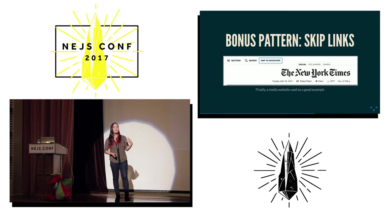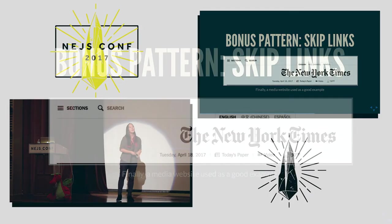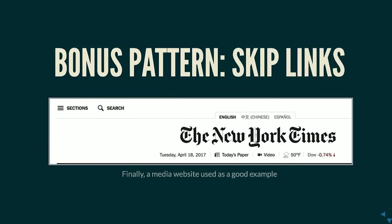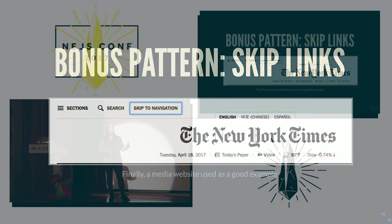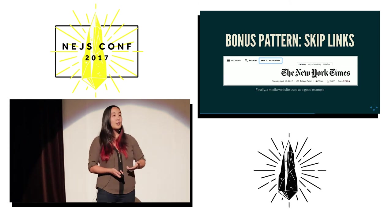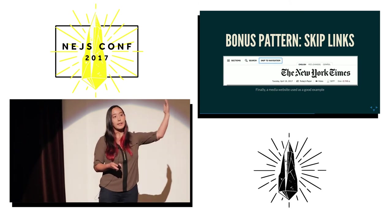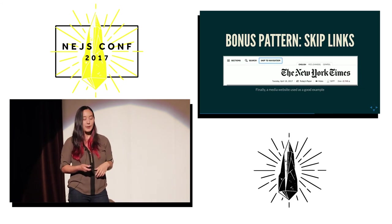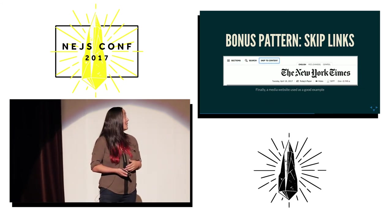Skip links are actually one example where you want keyboard usage to differ slightly from mouse usage — you'll never see them if you only use a mouse. They appear at the top of a webpage when you start tabbing, and they allow you to skip past a whole bunch of content that may have many tab stops, like a navigation menu or header. This is especially useful in web apps where you're changing pages constantly and don't want to tab through everything again each time.